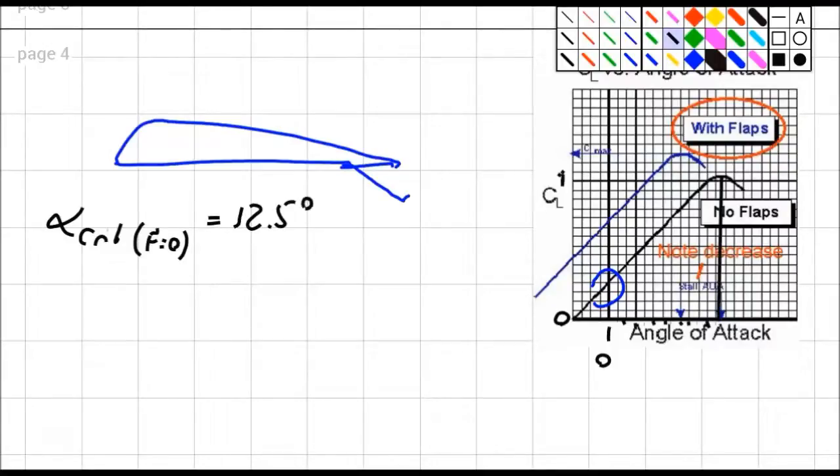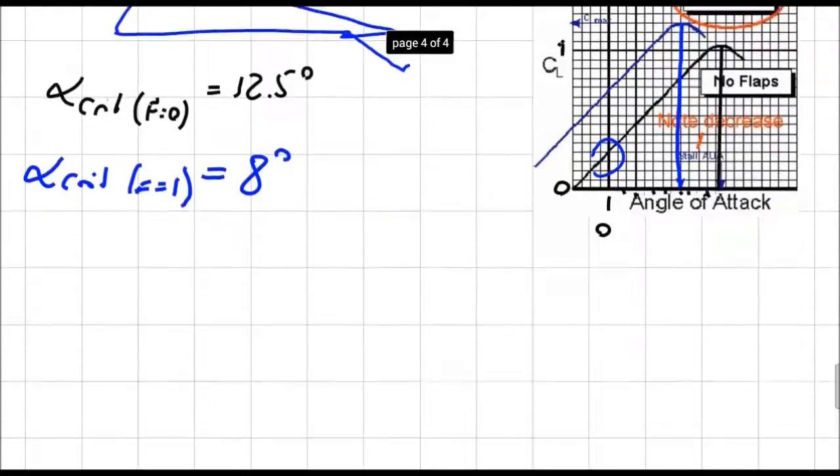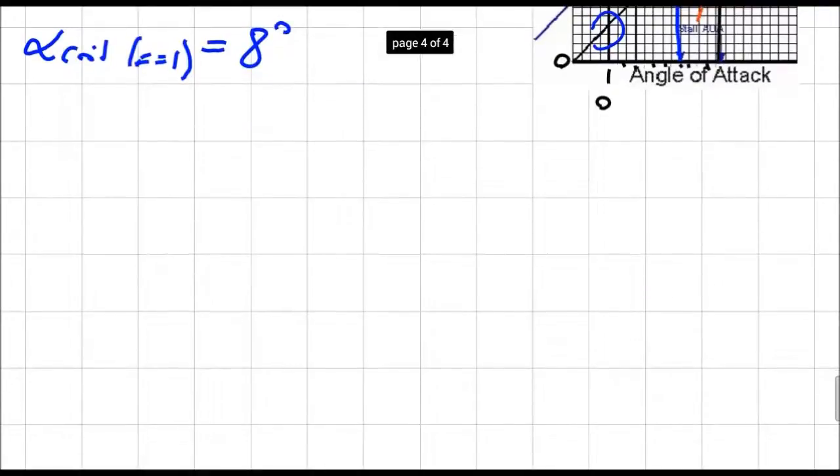Now we count quickly, this is 0, 1, 2, 3, 4, 5, 6, 7, 8, 9, 10, 11, 12, 12.5, so α_crit no flaps would be 12.5 degrees. We can do the same for the blue curve. It peaks here, we go down that brings us to 8 degrees. So α_crit with flaps 1 is 8 degrees.